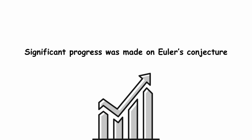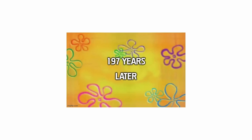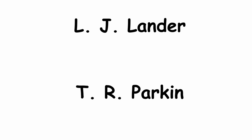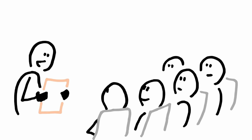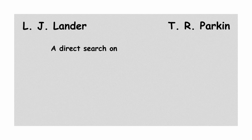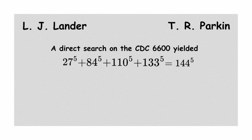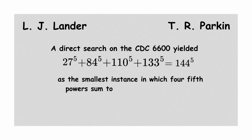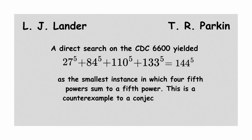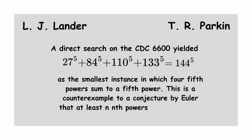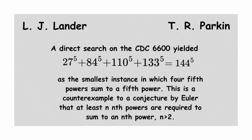Significant progress was made on Euler's conjecture in a 1966 paper — that's 197 years later — by L.J. Lander and T.R. Parkin. The contents of this paper will now be recited in full. Quote: 'A direct search on the CDC 6600 yielded 27 to the 5th plus 84 to the 5th plus 110 to the 5th plus 133 to the 5th equals 144 to the 5th as the smallest instance in which 4 fifth powers sum to a 5th power. This is a counterexample to a conjecture by Euler that at least n nth powers are required to sum to an nth power, n greater than 2.' Unquote. The paper was only two sentences long.